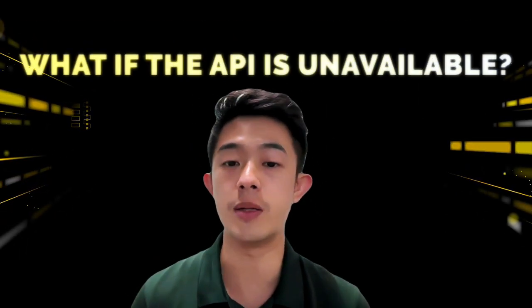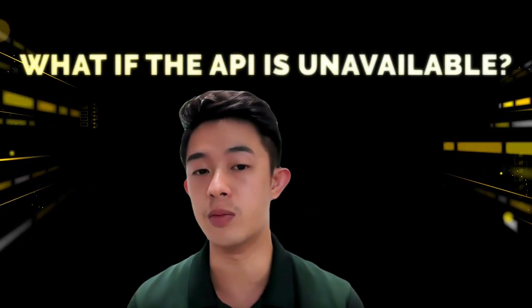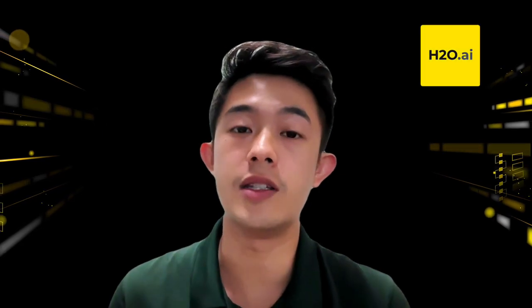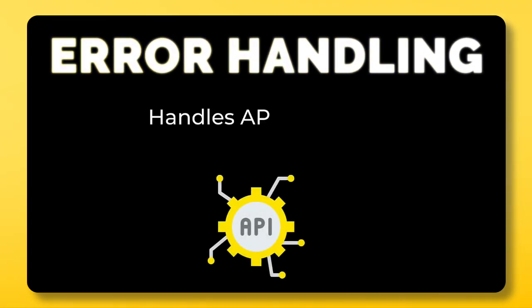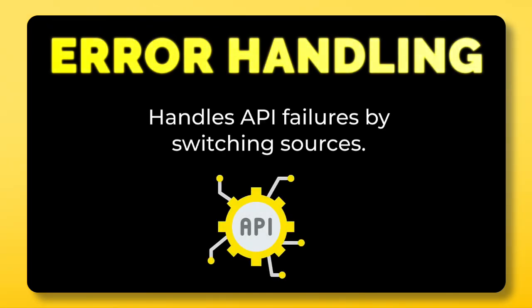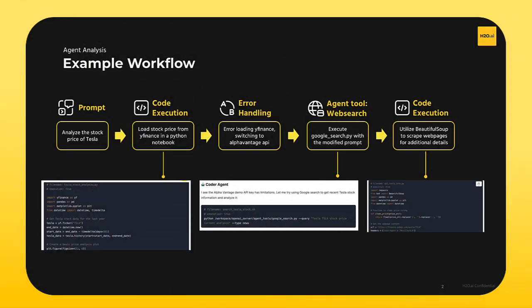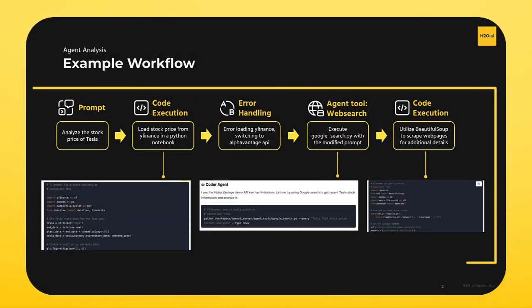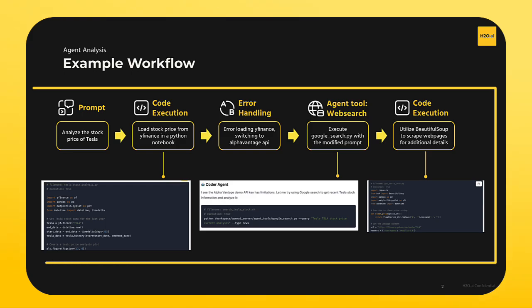But what happens if the requested API is unavailable? In this case, the Yahoo Finance API fails to load the stock price. Instead of stopping or requiring manual intervention, the agent dynamically switches to an alternative source, such as the AlphaVantage API. This adaptive error handling mechanism ensures that the workflow continues without disruption, making the agent resilient to real-world scenarios.